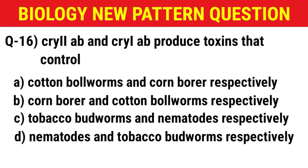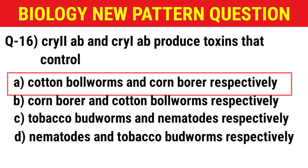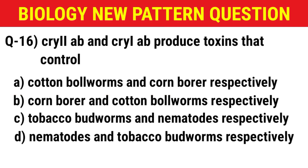Next question: Cry2AB and Cry1AB produce toxins that control — (A) cotton bollworms and corn borer respectively, (B) corn borer and cotton bollworm respectively, (C) tobacco budworm and nematodes respectively, (D) nematodes and tobacco budworms respectively. The correct answer is option A: cotton bollworms and corn borer respectively.